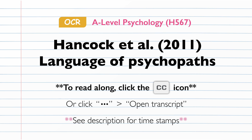Despite only representing around 1% of the general population, previous studies have estimated that between 15 and 25% of the prison population consist of psychopaths, which means that they are hugely over-represented in the criminal population. This has created a need for psychologists and the prison system as a whole to better understand psychopathy, in order to help mitigate the potential risks of psychopaths to society and rehabilitate those who are in prison.